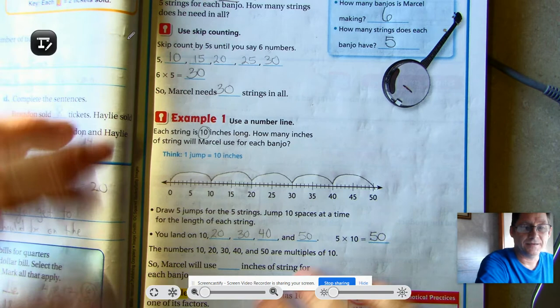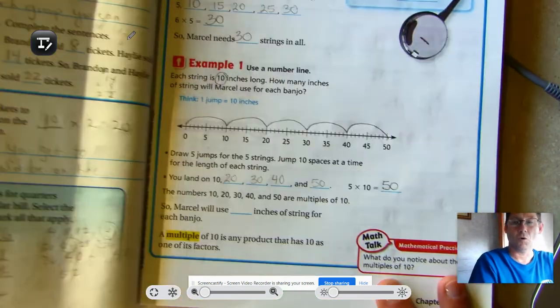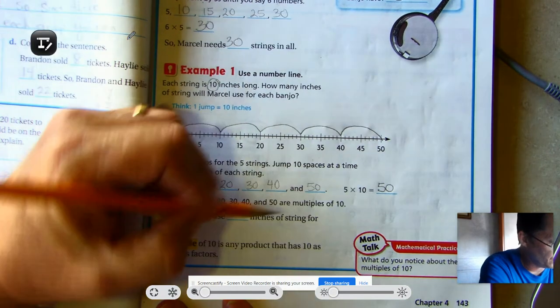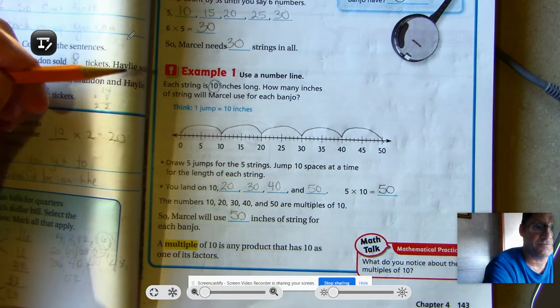So we say that the numbers 10, 20, 30, 40, and 50 are multiples of 10. So he will use 50 inches of string for each banjo.